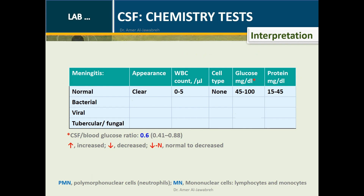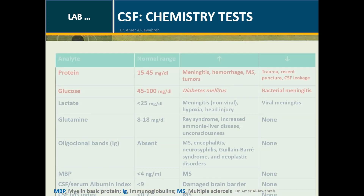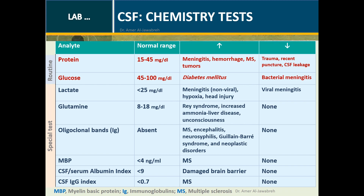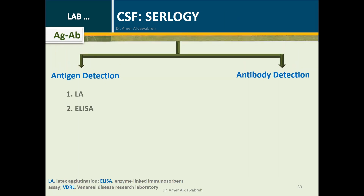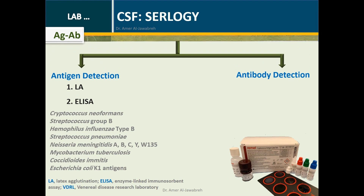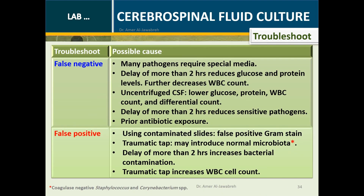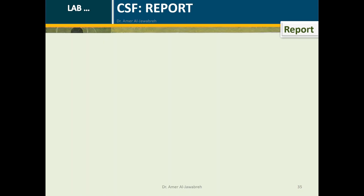CSF Chemistry Test Interpretation: Compared to normal values, bacterial meningitis is characterized by turbid appearance, increased white BCs (predominantly neutrophils), low glucose, and high protein. Viral meningitis is characterized by clear appearance, increased white BCs (predominantly lymphocytes and monocytes), normal glucose, and increased protein. Protein and glucose are routinely determined; other tests may be requested on special occasions. CSF Serology includes antigen detection using latex agglutination and ELISA, or antibody detection such as VDRL for neurosyphilis. Troubleshooting guides and a reporting form are also provided.